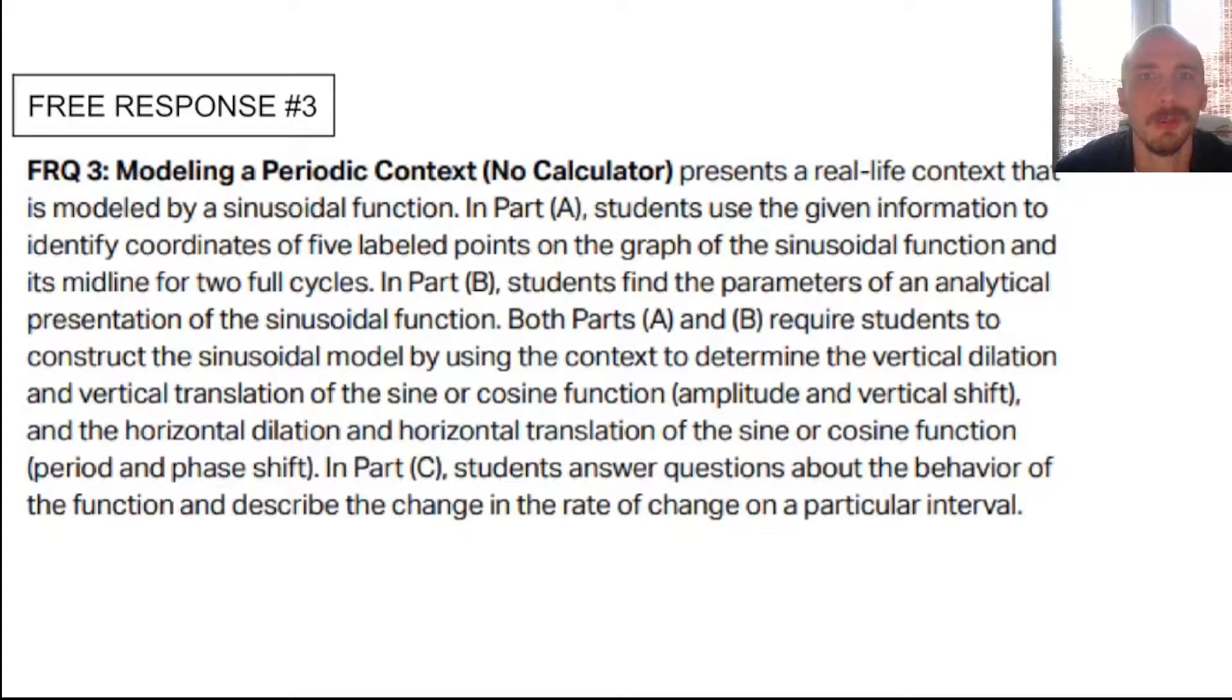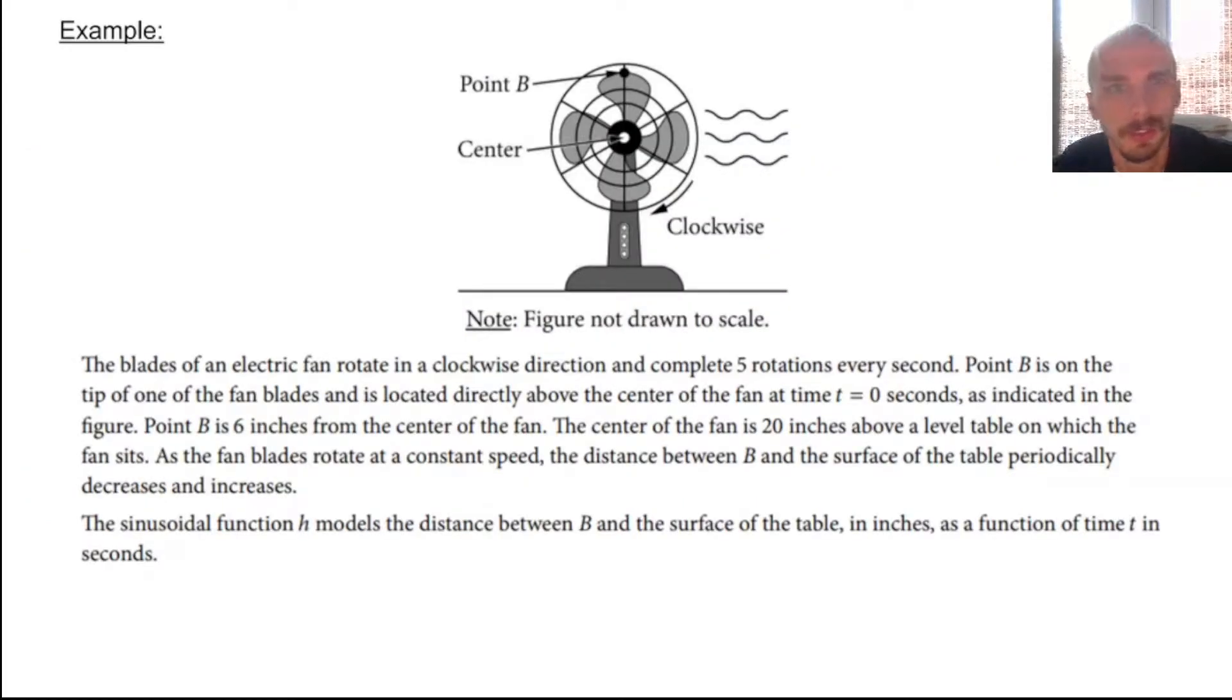All right, in this video I'm going to be talking to you about AP Precalculus Free Response Question number three. Really what you need to know is that it's going to be about modeling a periodic context. We're going to make a sine or cosine model for something that's a repetitive situation. If you want to pause and read all the details about the question, feel free to. I'm going to go in and we're going to work the sample that they gave us in the course description from the College Board, and then I'm going to talk about how this one's going to be scored and why we need to really focus on this one. So let's just get right to it.